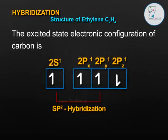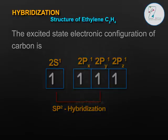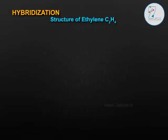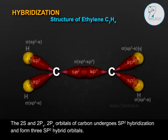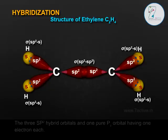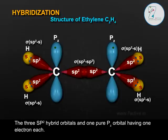The excited state electronic configuration of carbon is 2s1, 2px1, 2py1, 2pz1. One 2s electron is promoted to a 2p orbital. The 2s, 2px, and 2py orbitals of carbon undergo SP2 hybridization and form three SP2 hybrid orbitals. The three SP2 hybrid orbitals and one pure Pz orbital each have one electron.